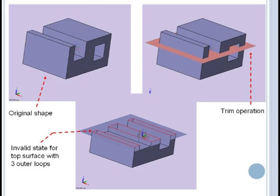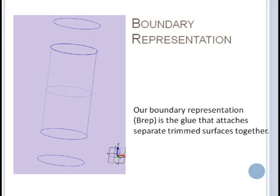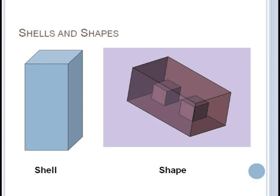Our boundary representation is the topological glue that connects all of our surfaces together. At the highest level all the faces that are connected form what's called a shell and shells may be nested just like loops to create our final shape. A shape may only consist of a single shell or it may have void regions inside bounded by other shells.